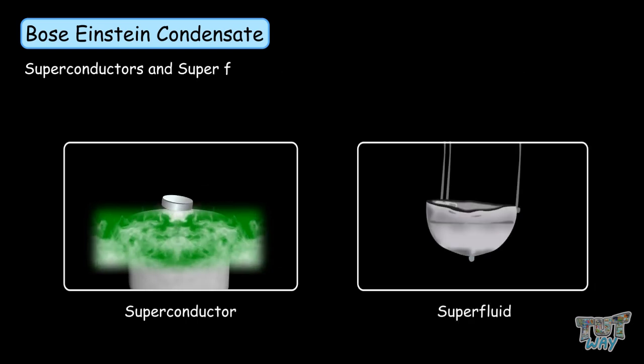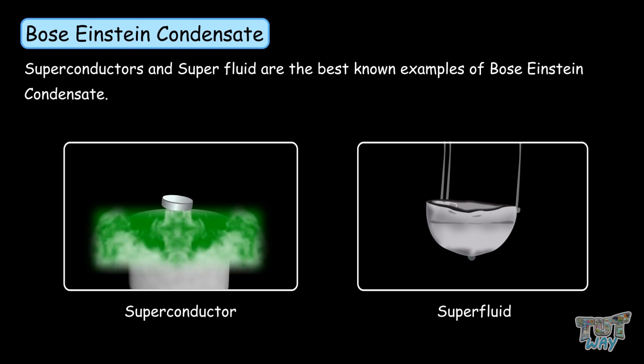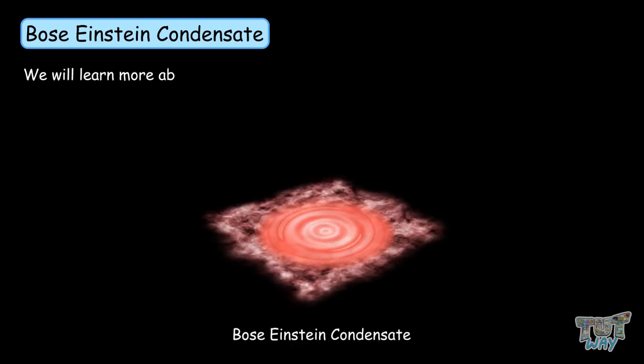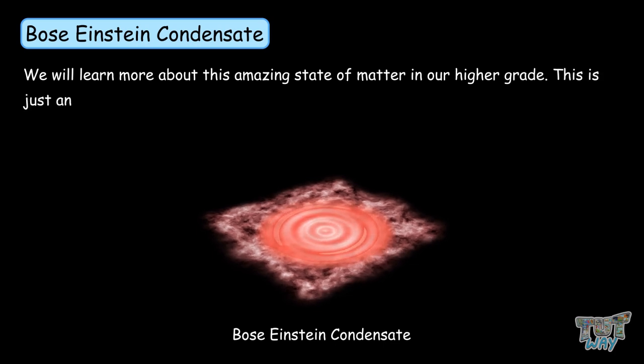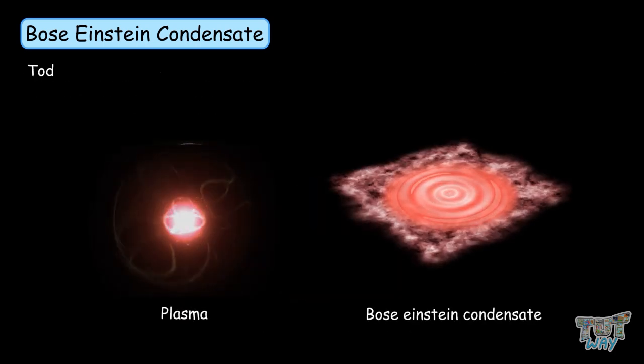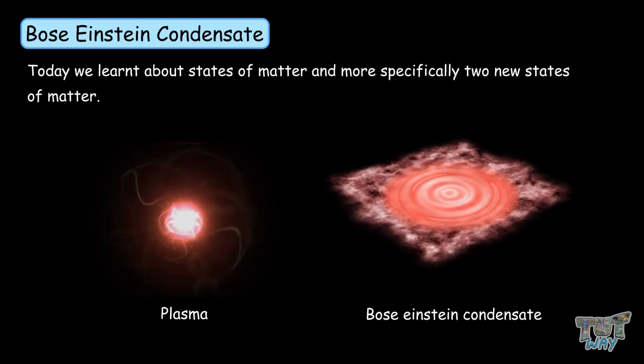Superconductors and superfluids are the best-known examples of Bose-Einstein condensate. We will learn more about this amazing state of matter in our higher grades. This is just an introduction for you. So, friends, today we learned about the states of matter, and more specifically, two new states of matter.